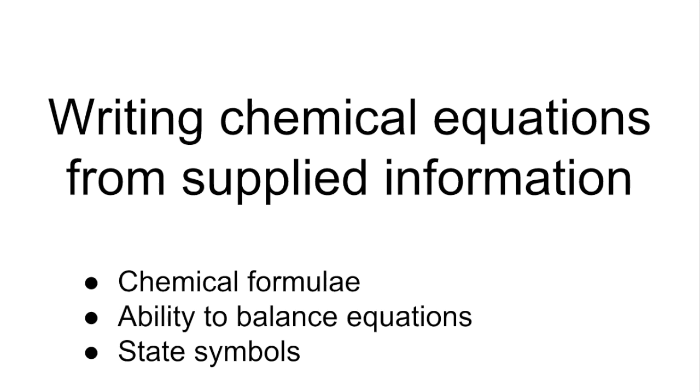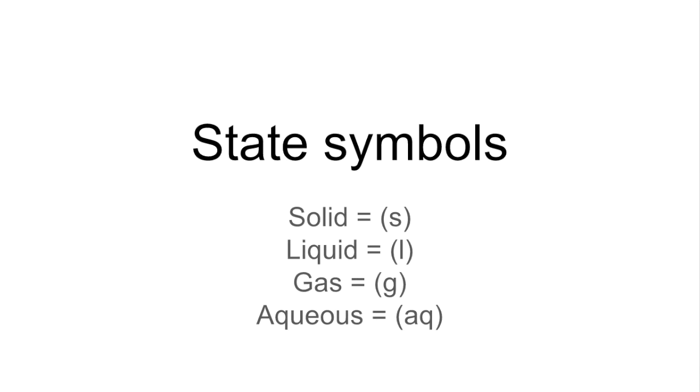So I'll just quickly explain what state symbols are just in case you've never come across them. So these are lowercase letters in brackets, and we would typically put those after the chemical formula in the equation. So if you've got a solid it's S, liquid is L, gas is G, and if you've got an aqueous solution, a solution in water, you would put AQ.